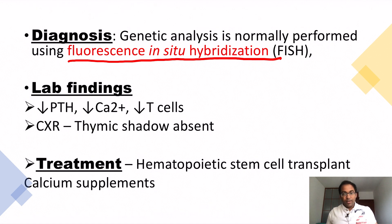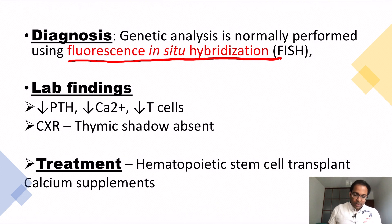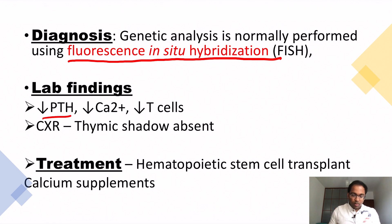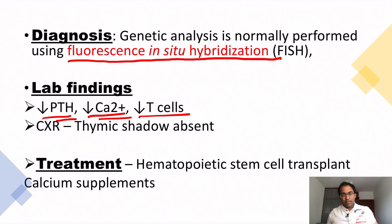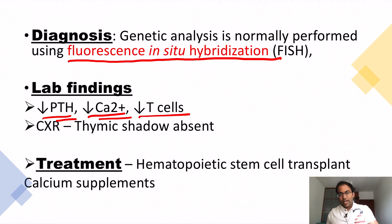Lab findings show decreased parathyroid hormone, which leads to decreased calcium — a problem with calcium homeostasis. There are also decreased T-cells, causing recurrent infections such as viral and fungal infections.